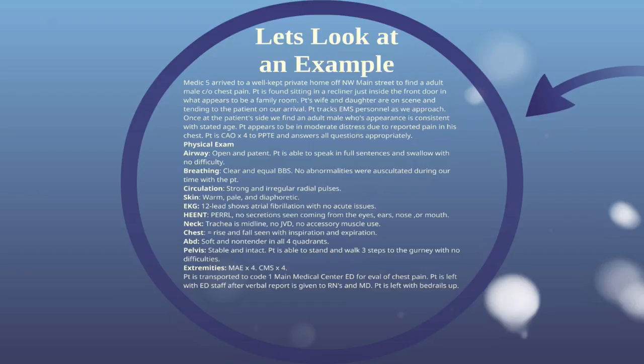EKG: 12-lead shows atrial fibrillation with no acute issues. Head, eyes, ears, nose, and throat — HEENT: PERRL, pupils equal, round, and responsive to light. No secretions seen from the eyes, ears, nose, or mouth. Neck: trachea is midline, no JVD, no accessory muscle use. Chest: equal rise and fall seen with inspiration and expiration. Abdomen: soft and non-tender in all four quadrants. Pelvis: stable and intact. Patient is able to stand and walk three steps to the gurney with no difficulties. Extremities: moves all extremities times four. CMS times four — circulation, motor, sensory. Patient is transported code one to Main Medical Center ED for eval of chest pain. Patient is left with ED staff after verbal report is given to RNs and MD. Patient is left with bed rails up.